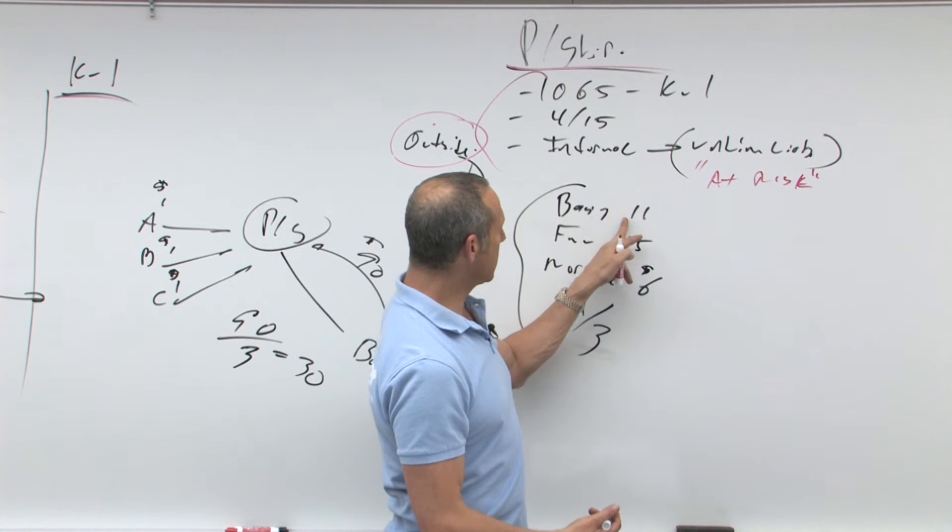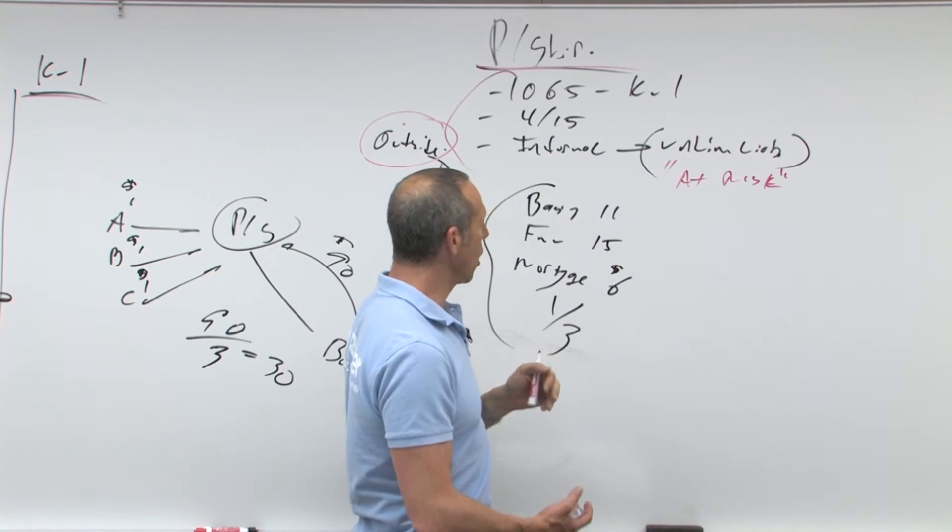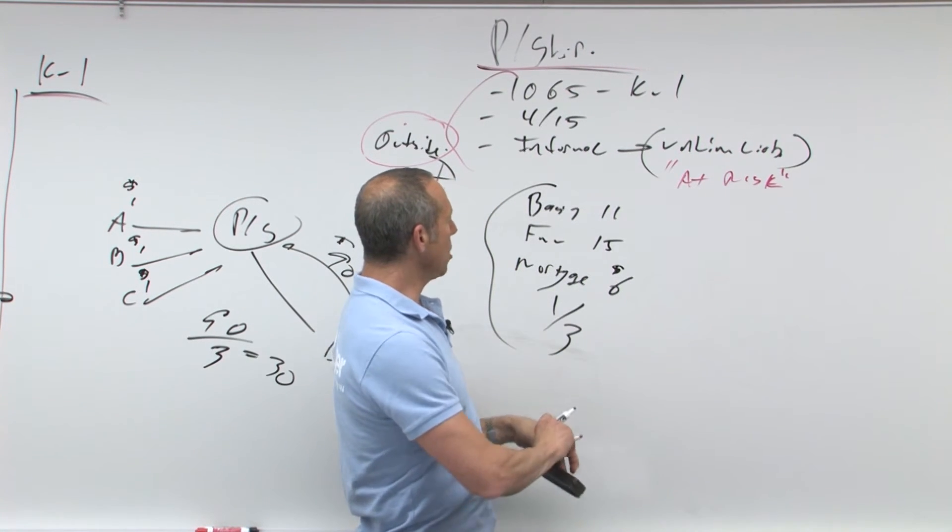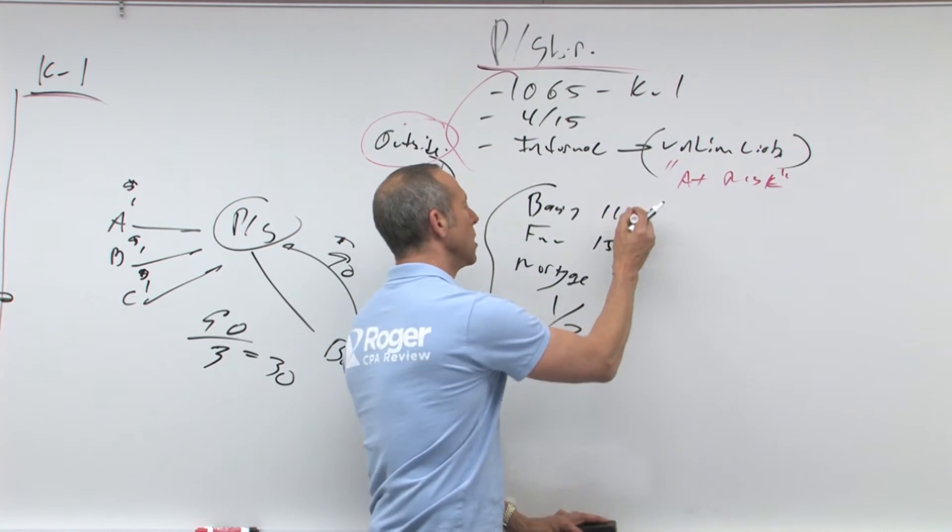So we've got the basis of the property I'm contributing is 11, fair value is 15, mortgage is six. So let's see what it is as far as my basis. I'm contributing, remember if you contribute cash or property, carry over basis, carry over holding period, so 11 bucks.